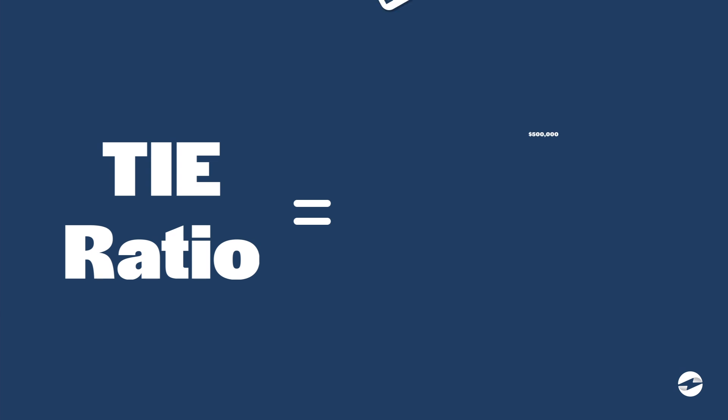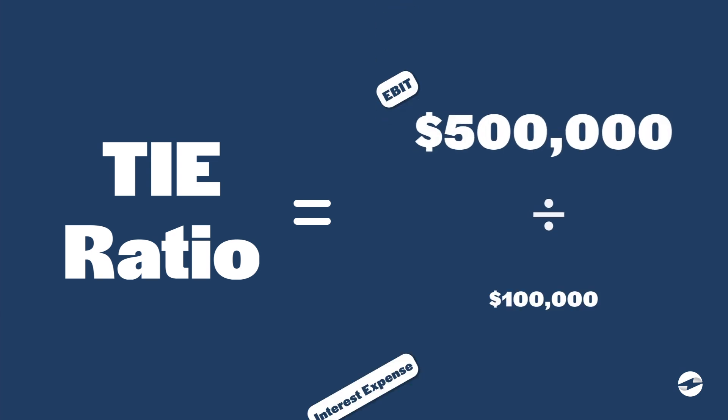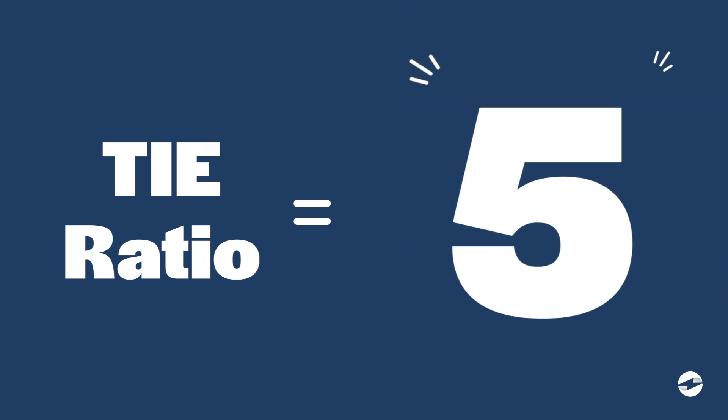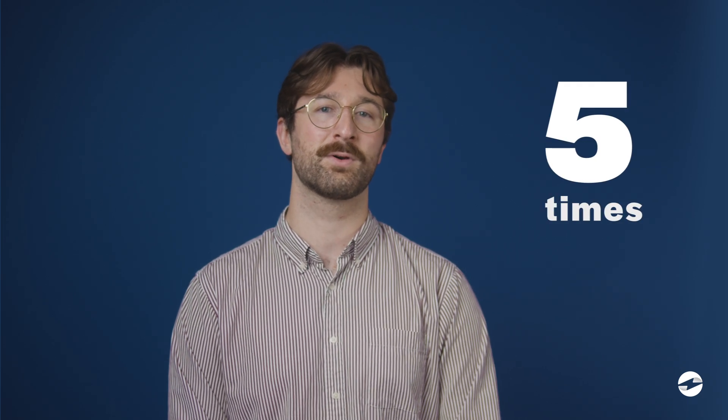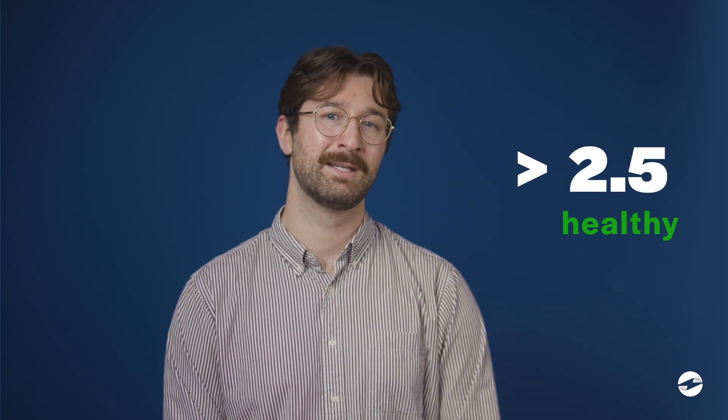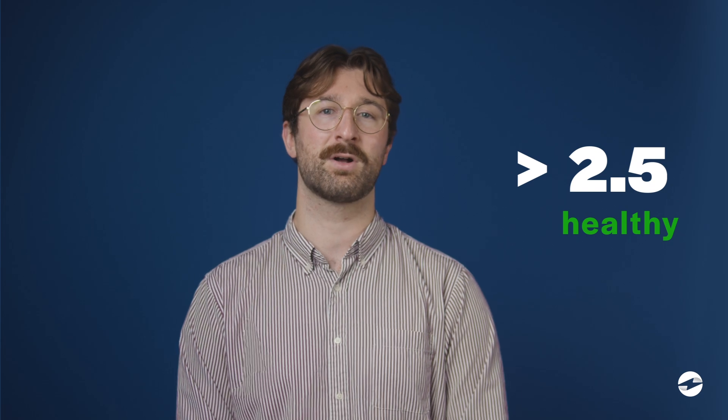When we put it into the formula and divide $500,000 by $100,000, we get a TIE ratio of five. A TIE ratio of five means that Jack's tool store earns five times more than its interest obligations. In general, a TIE ratio above 2.5 is considered healthy, indicating a strong ability for companies to meet their interest payments.